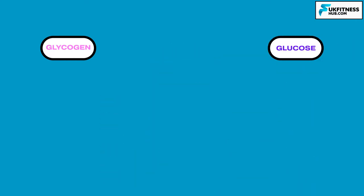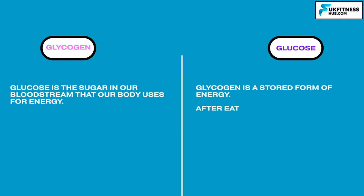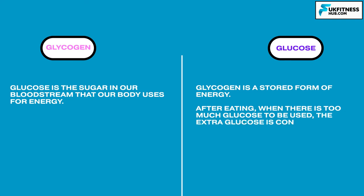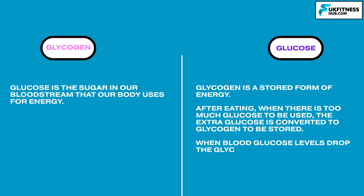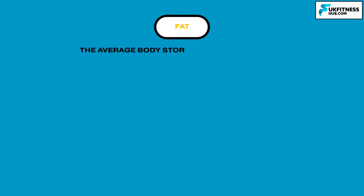So what is the difference between glucose and glycogen? Glucose is the sugar in our bloodstream that our body uses for energy. Glycogen is a stored form of energy. After eating, when there is too much glucose to be used, the extra glucose is converted into glycogen to be stored. When blood glucose levels drop, the glycogen gets converted back into glucose and is released into the bloodstream to be used. The body's largest store of potential energy comes from fats, with the average body storing over 100,000 calories as fat.